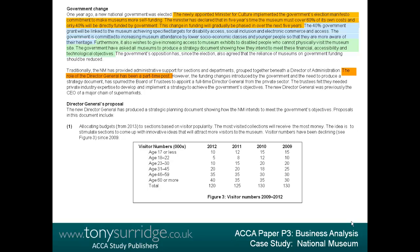Director general's proposal: the new director general has produced a strategic planning document. Proposals include: allocating budgets from 2013 to sections based on visitor popularity — the most visited collections receive the most money — to stimulate sections to come up with innovative ideas attracting more visitors. Visitor numbers have been declining since 2009, as shown in Figure 3. Declining visitor numbers would be interpreted as a serious economic problem for the museum — colour orange. The fact that visitors are proportionately of older age is worrying, particularly since the government has strengthened youth as part of its performance requirement — colour green.